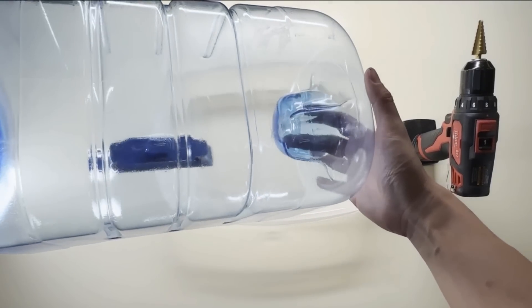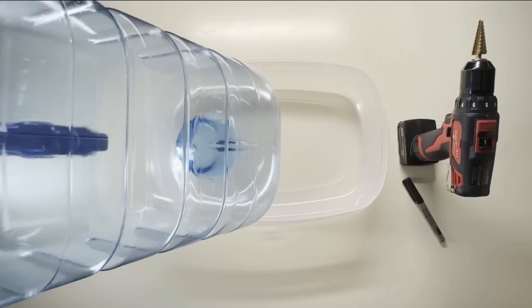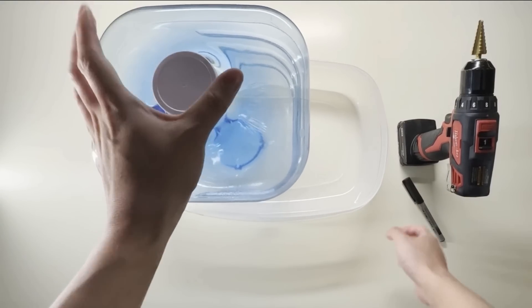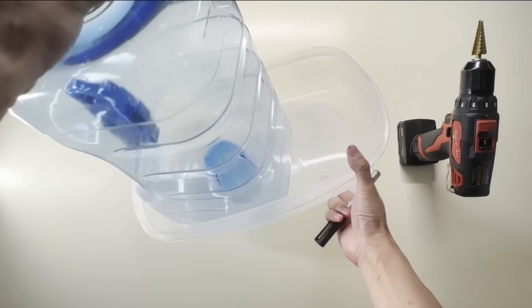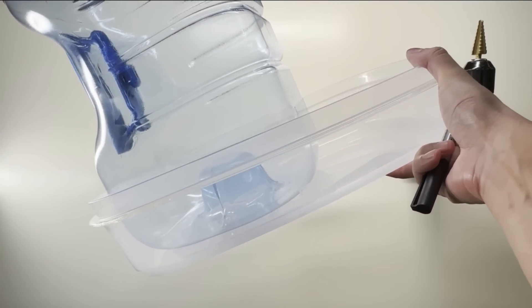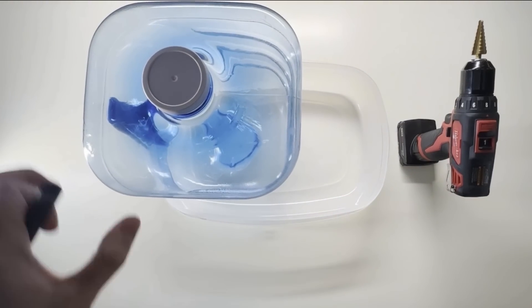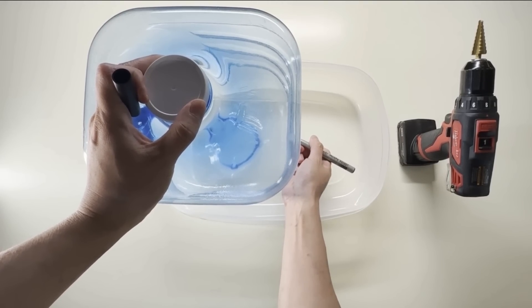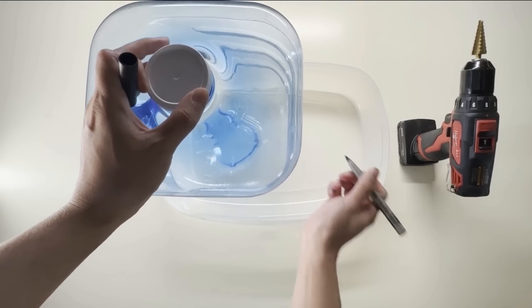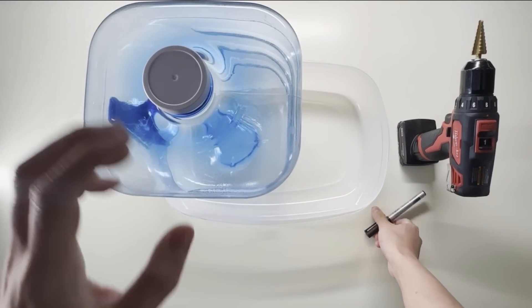The first step is to grab your three-gallon jug and your container. You want to be marking the jug where you want to drill a hole. Please ensure that the mark sits slightly below the top of your container, so when it's filled with water, the water doesn't overflow.